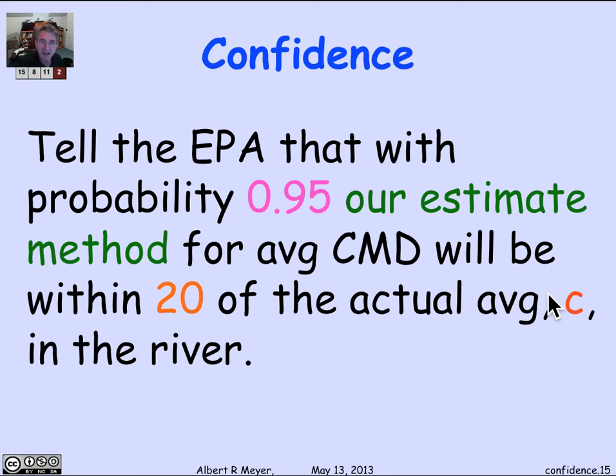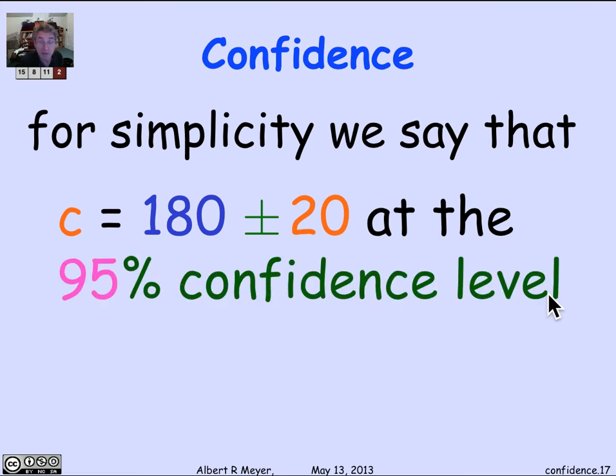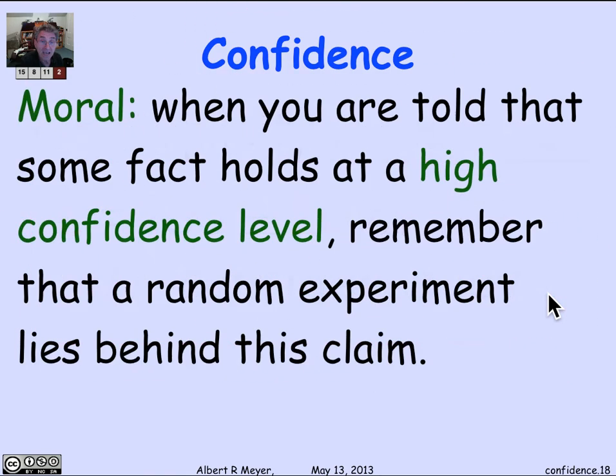So it's our estimate that's correct with probability 0.95. Now this is a long thing to say to the EPA. What we'd like to say is that we think that the real average C is within 20 of 180, is probably within 20 of 180, because that's what our tests seem to say. But we're not allowed to talk about the probability that C has some value or other. So instead, we summarize the story about how we measured C using a probabilistic process that's right 95% of the time by saying that C is 180 plus or minus 20 at the 95% confidence level. That's a shorthand way of saying we've got this process that we believe in that measured this unknown quantity and told us what it was.